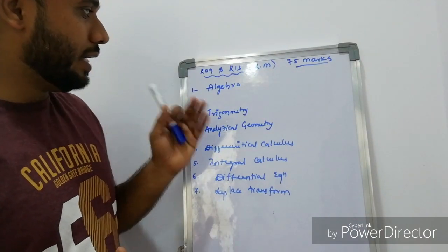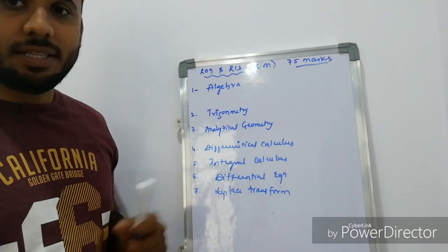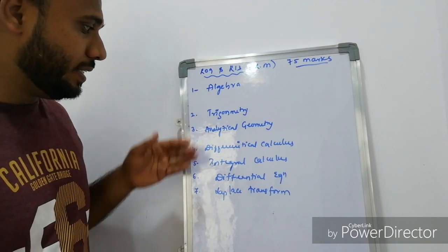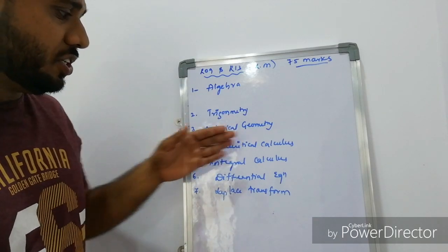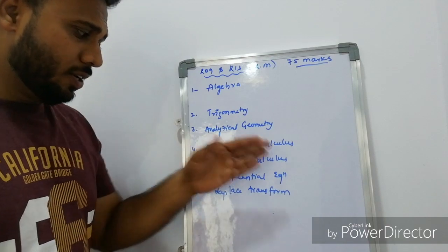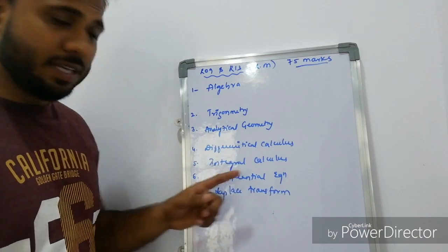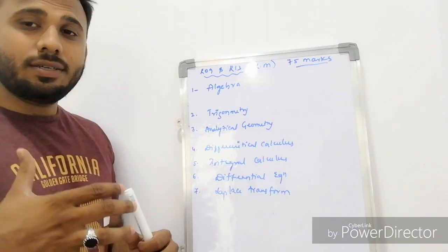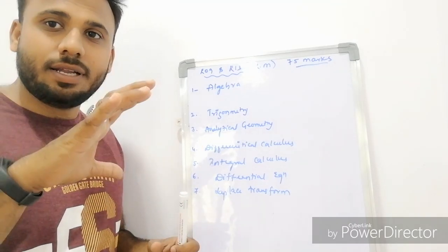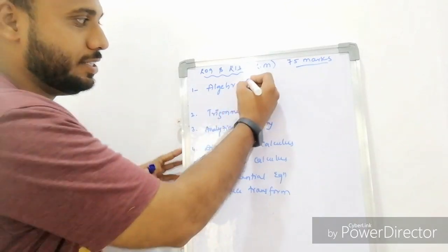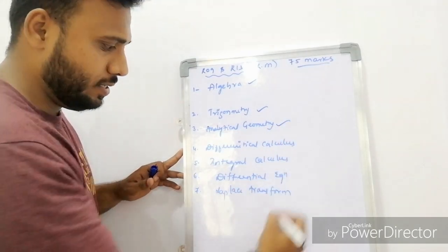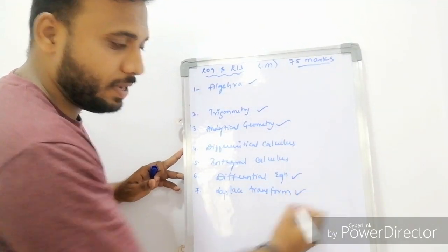The syllabus of R09 and R13 for remedical mathematics includes algebra, trigonometric, analytical geometry, differential calculus, integral calculus, differential equation and Laplace transform. For scoring good marks, you have to cover 5 units like algebra, trigonometric, analytical geometry, differential equation and Laplace.